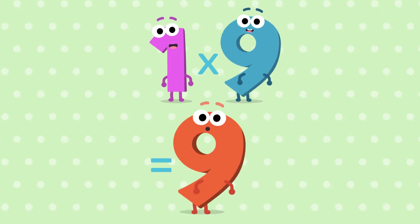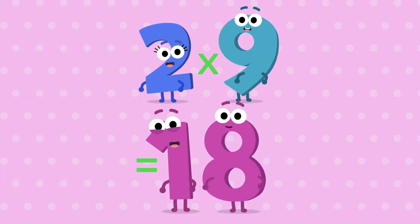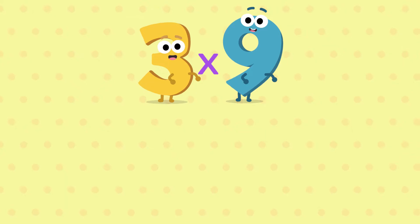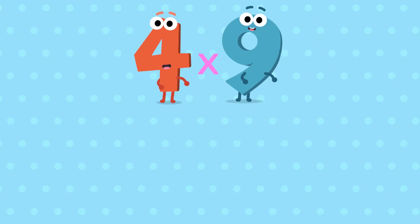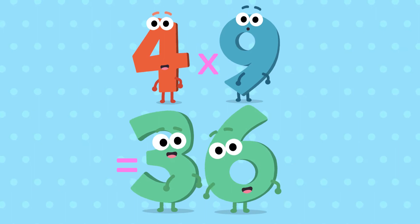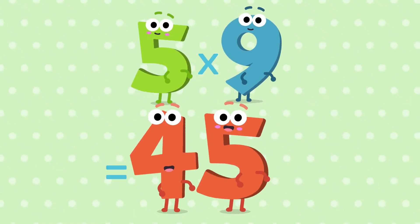1 nine is 9, 2 nines are 18, 3 nines are 27, 4 nines are 36, 5 nines are 45,